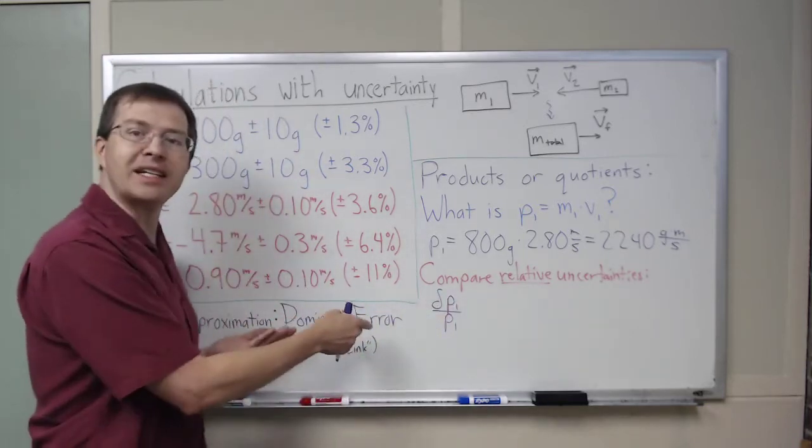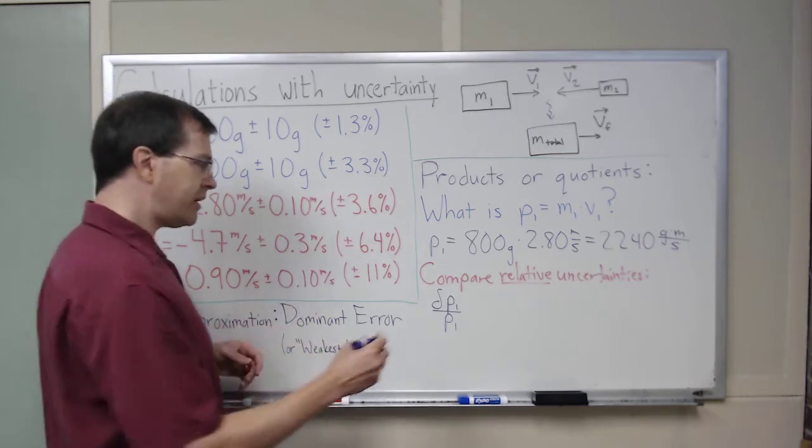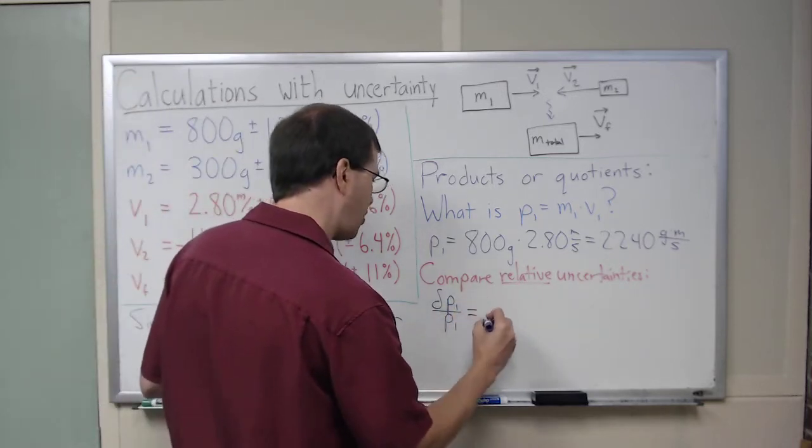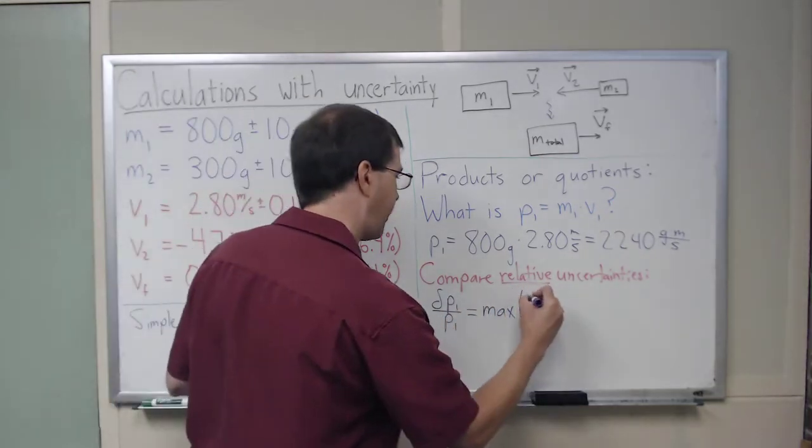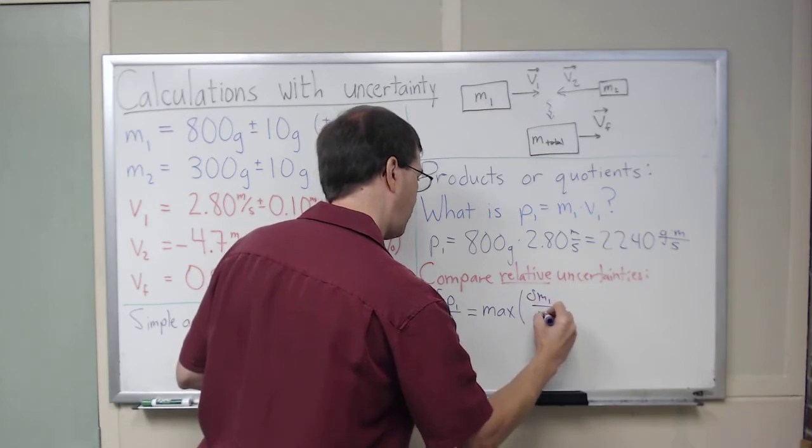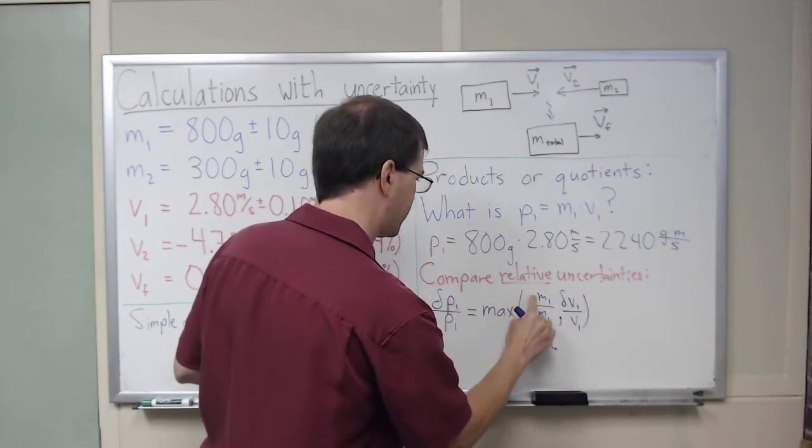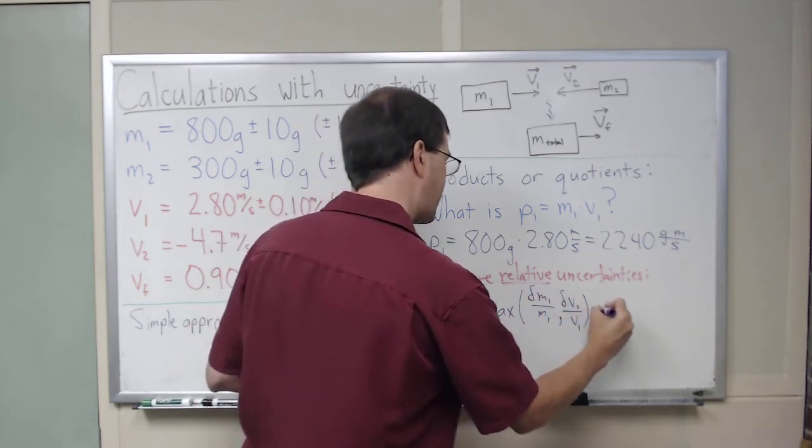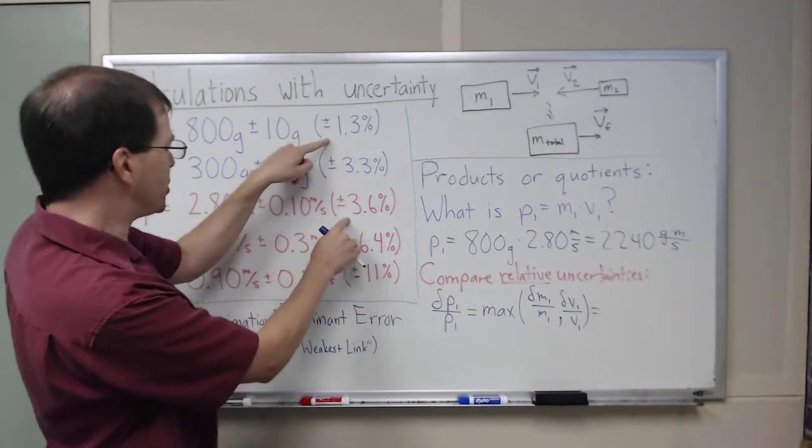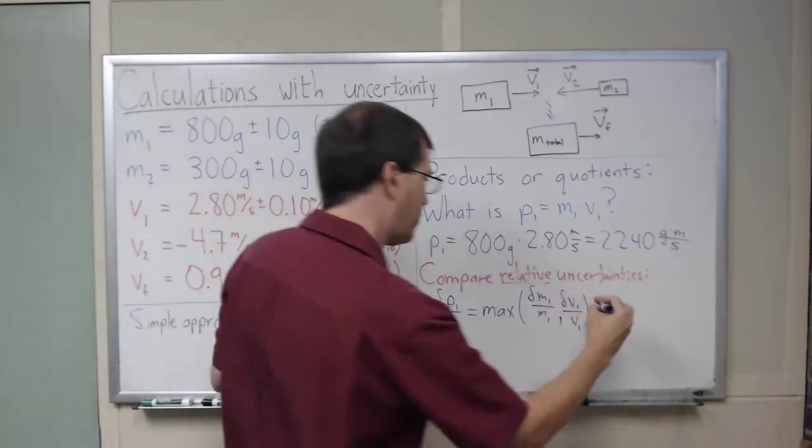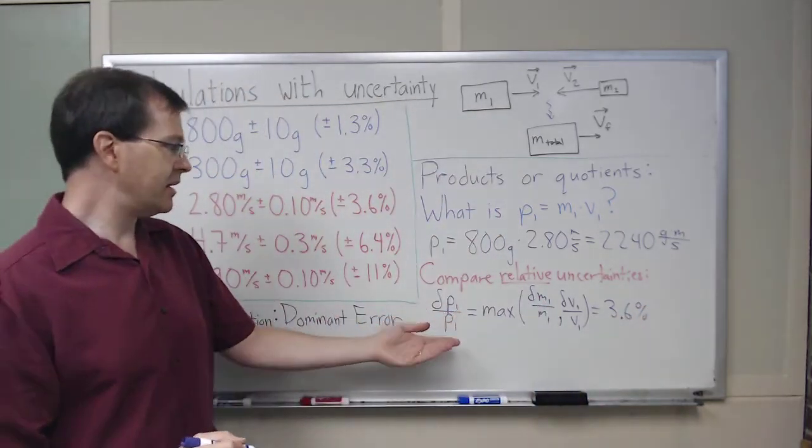If we're using the dominant error approximation, which is our simplifying assumption that works pretty well, then dominant error means we just look at the biggest, the maximum, of the two relative uncertainties. We compare delta M1 over M1 and delta V1 over V1. I just compared the two. Neither one has units, so it's fair to compare them. Which one is bigger? Delta V1 is bigger, so there we go, 3.6%. So that's my relative uncertainty in the momentum.